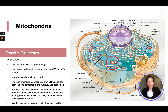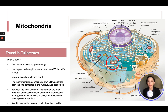The mitochondria is the cell's powerhouse — it supplies energy for the cell by using oxygen to burn glucose and produce ATP. It is involved in cell growth and death. The inner membrane contains its own DNA separate from the nucleus, and folds between the inner and outer membranes are called cristae. Chemical reactions here release energy, control water levels, and recycle and create proteins and fats using aerobic respiration.